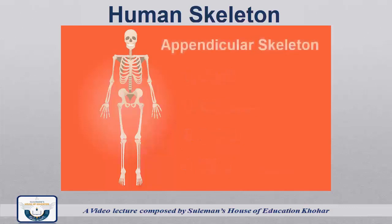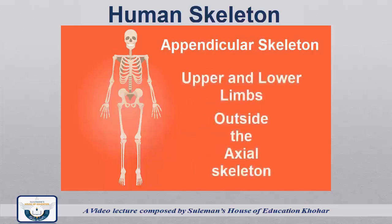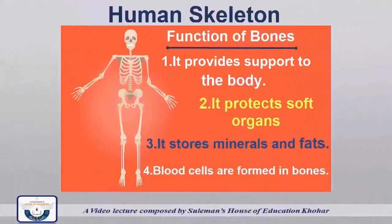Appendicular skeleton includes upper and lower limbs outside the axial skeleton. The bones in the human body perform the following functions: it provides support to the body, it protects soft organs, it stores minerals and fats, and blood cells are formed in the bones.